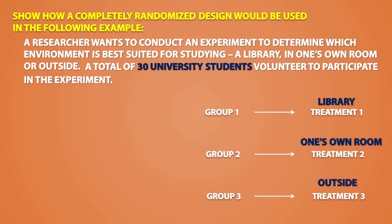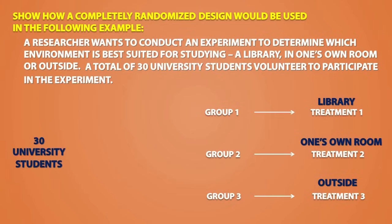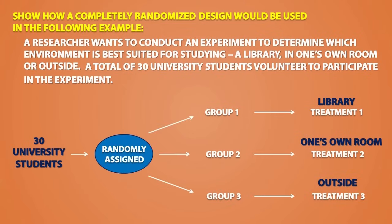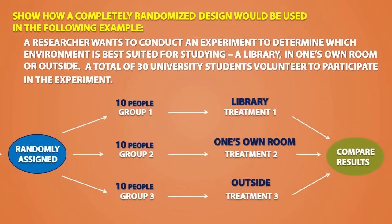Since there are 30 university students, these 30 subjects will be randomly assigned into three groups to receive the treatments. Since there are 30 people, each group will have 10 people. At the end of the experiment, we would compare the results from each treatment.